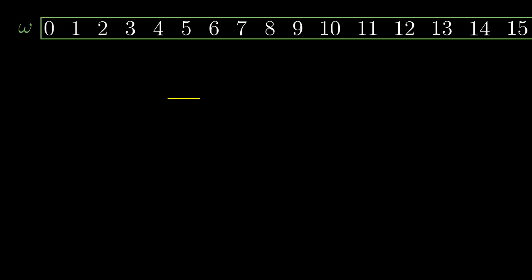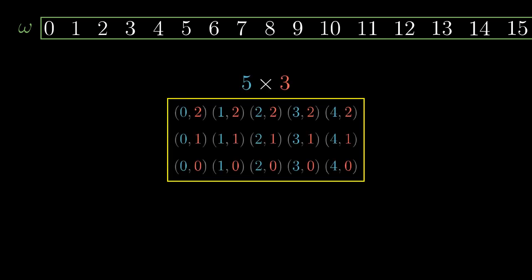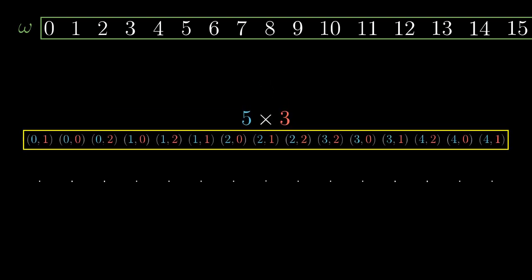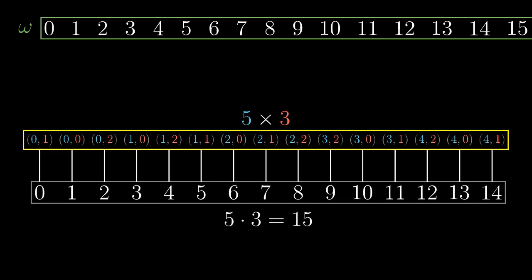Multiplication is similar, just that instead of the union, we construct the Cartesian product of the two sets. Again, we find the natural number of the same cardinality and that will be the arithmetical product of the two natural numbers.